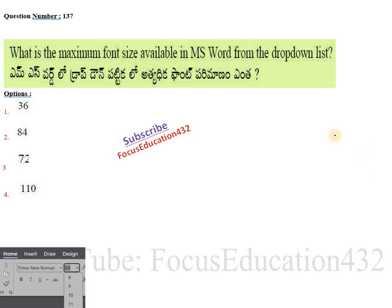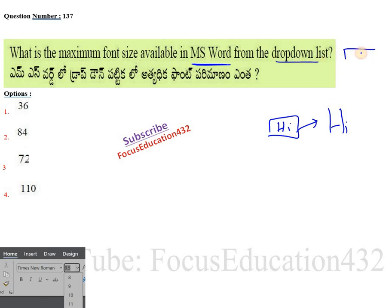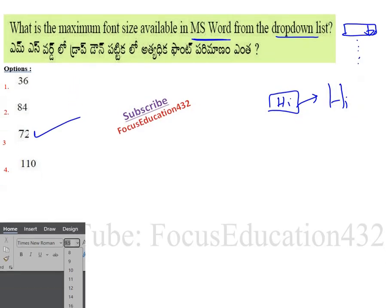Next question: what is the maximum font size available in MS Word from the drop-down list? Font size refers to how big the text appears. If you write something and want to increase the size, there is a drop-down list. The maximum font size available in MS Word's drop-down list is 72. Even though we can make text bigger than that manually, 72 is the maximum shown in the list.